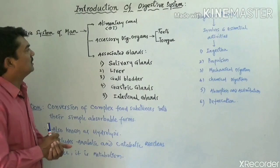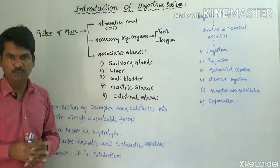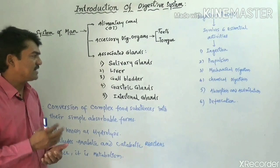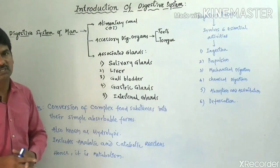The associated glands are of five types in human beings: salivary glands, liver, gallbladder, gastric glands, and intestinal glands. These are the structures present in the associated glands.